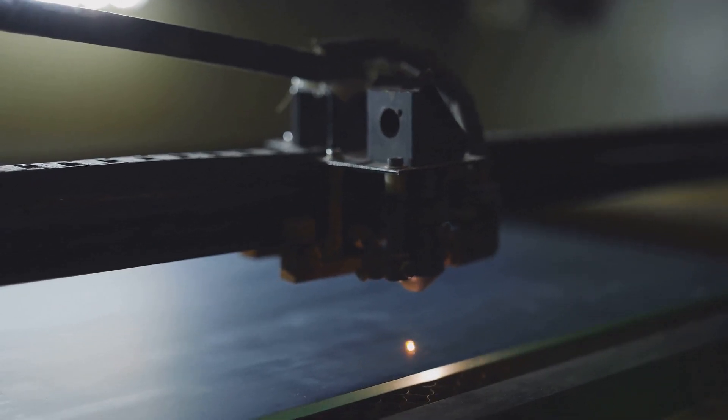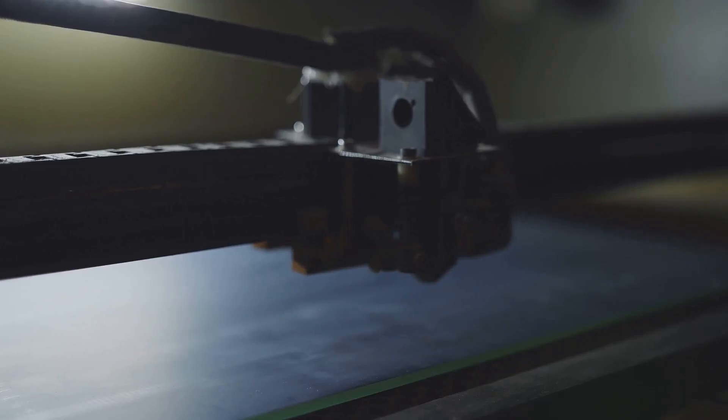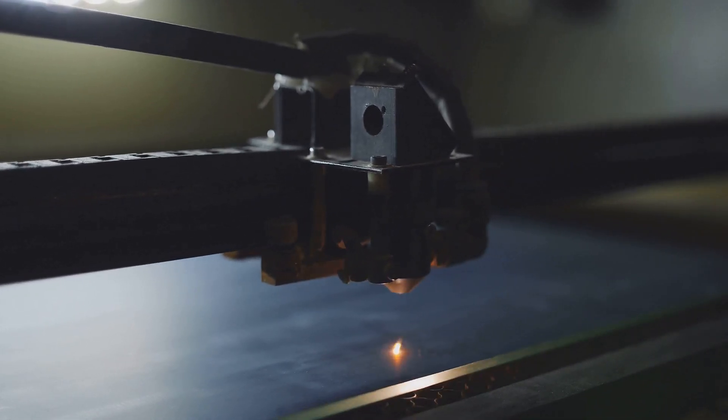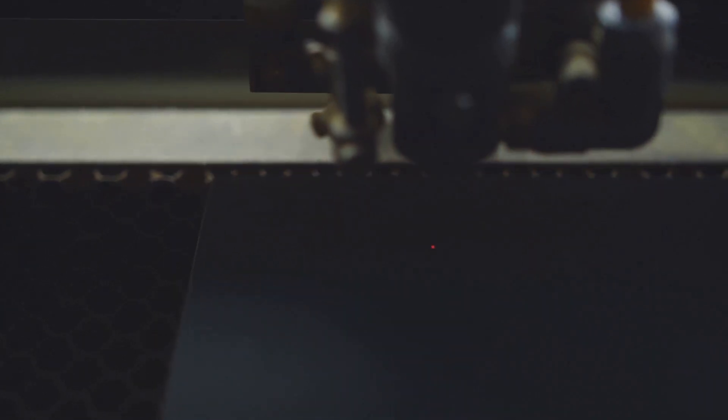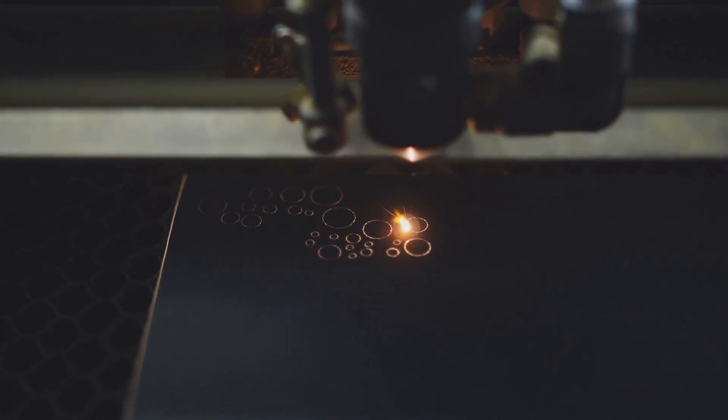The machine uses a series of mirrors to manipulate the EUV light, guiding it with unparalleled precision. These mirrors are not your ordinary mirrors. They are highly specialized components, coated with multiple layers of materials precisely engineered to reflect EUV light with maximum efficiency.